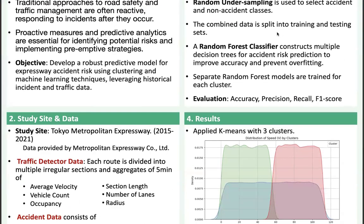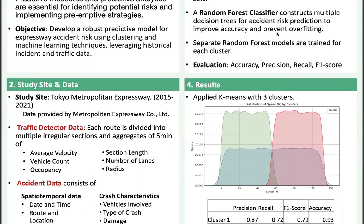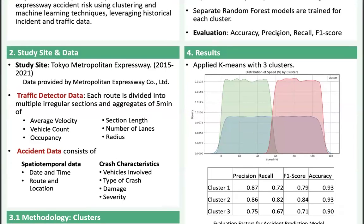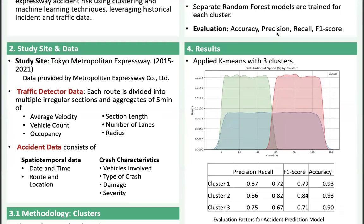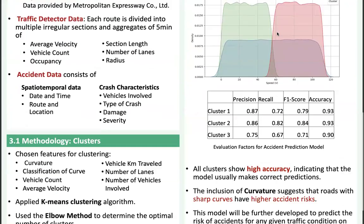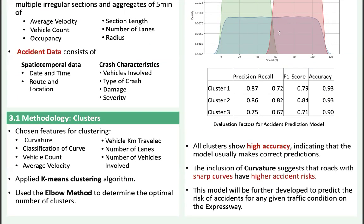Coming to the results, using the ELBO method we applied k-means with three clusters. The diagram shows the classification of clusters with different traffic velocity ranges. Each cluster represents a group of samples with distinct traffic and accident characteristics, enabling more accurate risk prediction. Our evaluation metrics include accuracy, precision, recall, and F1 score. These high accuracy rates indicate that our model is effective at making correct predictions. Notably, including curvature as a feature suggests that roads with sharp curves are at higher risk of accident.